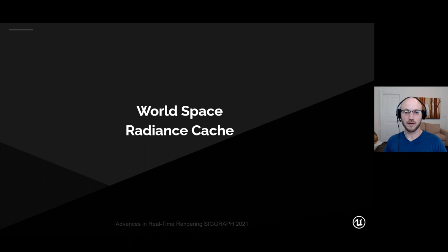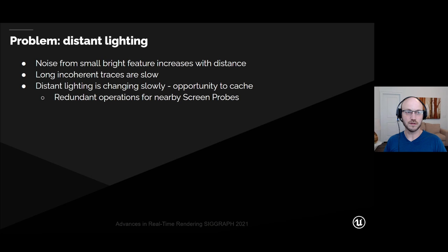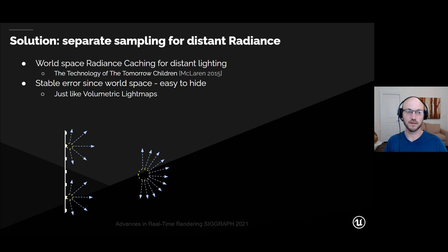Now I'm going to talk about our world-space radiance cache. The problem with tracing only from screen-space probes is a lot of noise from distant lighting — the noise from a small bright feature increases with distance to that feature, and those long incoherent traces are slow. Distant lighting changes very slowly both in time and space, which is an opportunity to cache across frames and reuse distant rays for neighboring screen probes. The solution is a separate sampling scheme for distant lighting using a world-space radiance cache, just like in the Technology of the Tomorrow Children by James McLaren. The world-space radiance cache has stable error because probes are placed in world space, making it easy to hide.